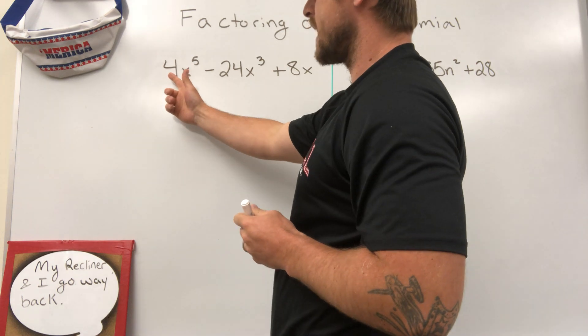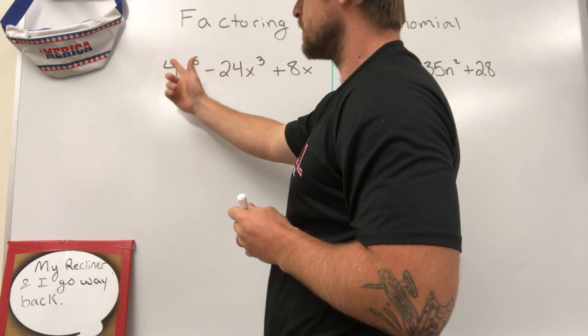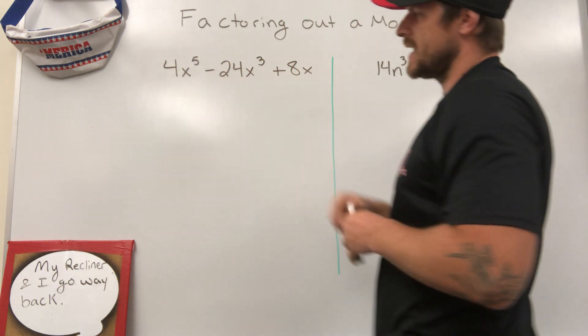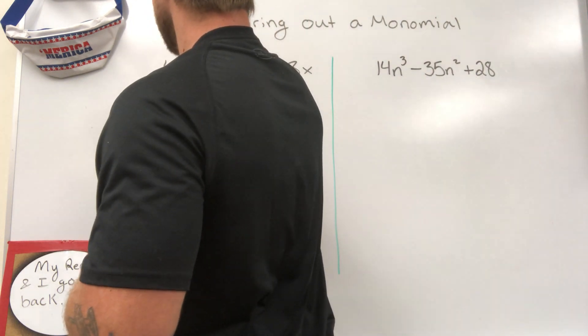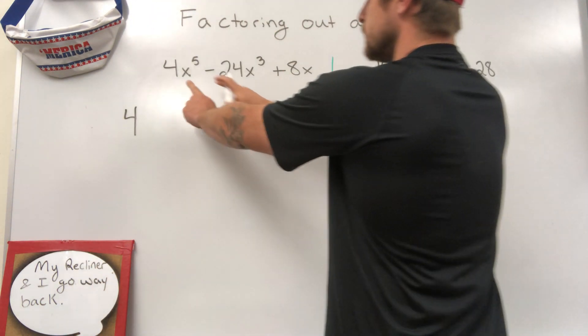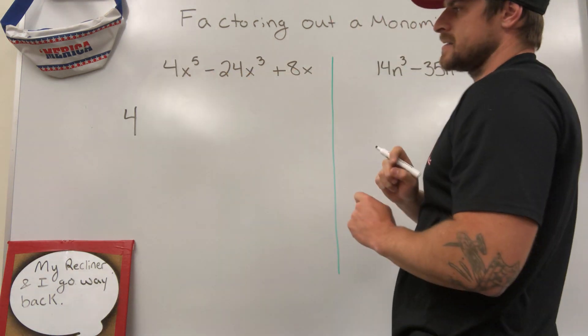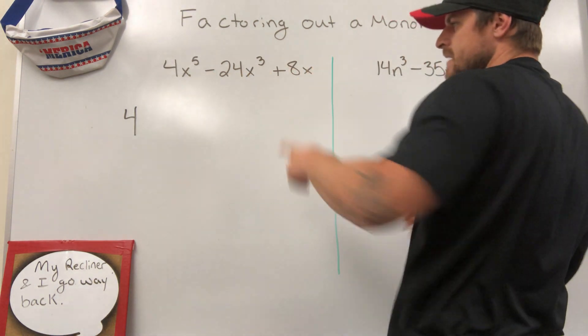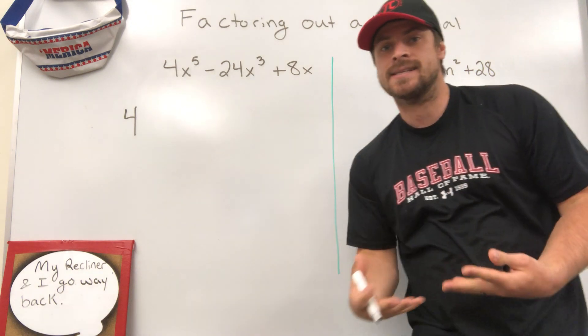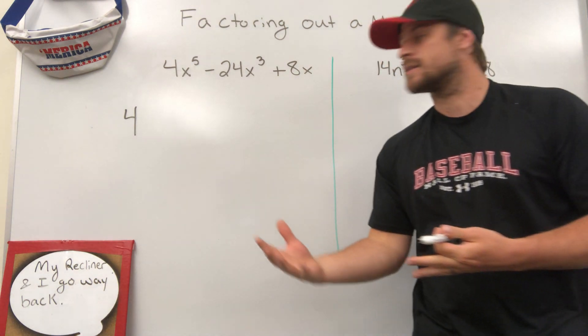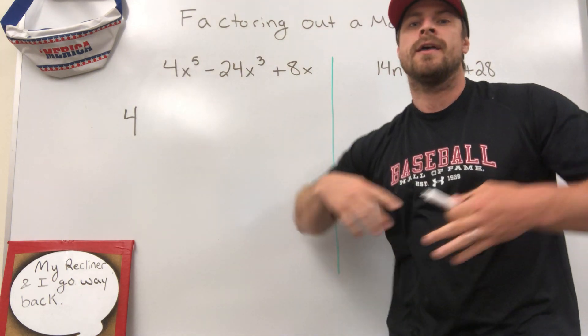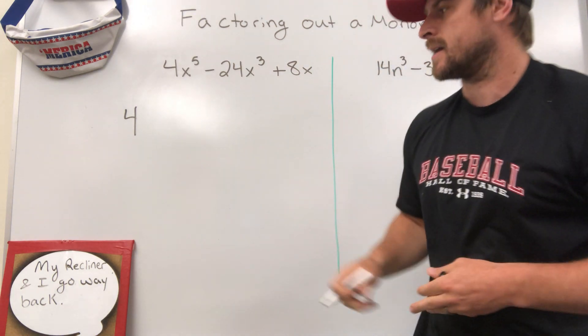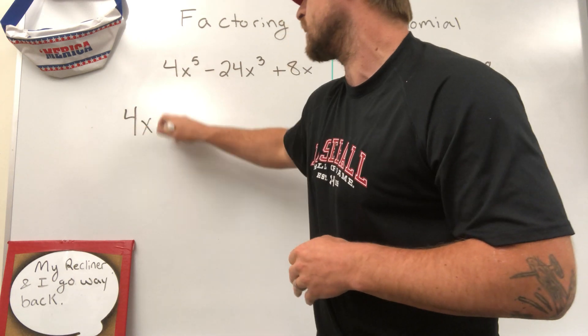We're going to start by finding the greatest common factor. What is the greatest common factor between 4, 24, and 8? They're all divisible by 4, so I'm going to pull 4 out. And then I have to ask myself, do each of the terms have an x? Yes, yes, and yes. The easy way to figure this out is go to the lowest one: x to the fifth, x to the third, x all alone. They all have at least one x, so I can pull x out as well.